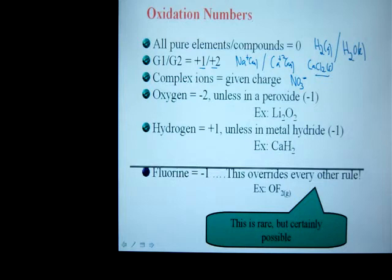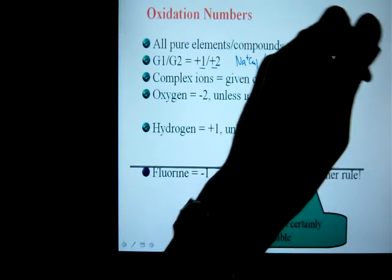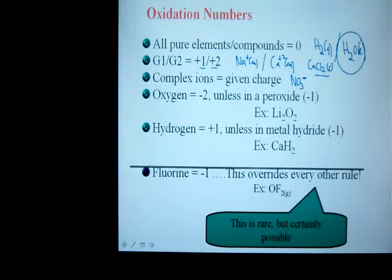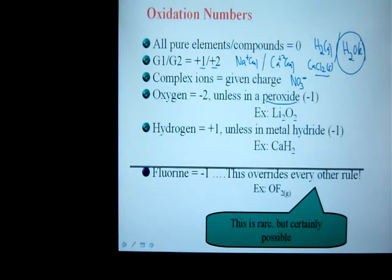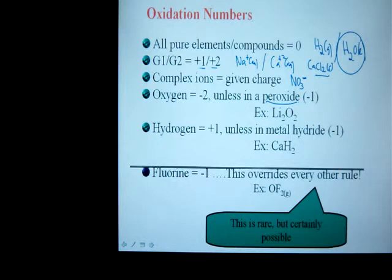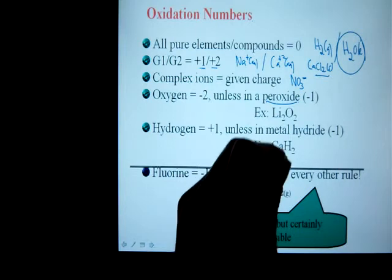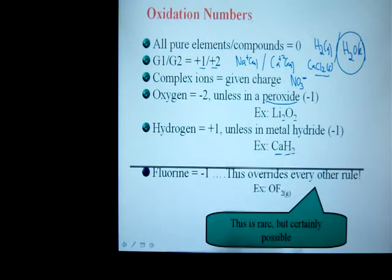That means the N and the three O's have to add up to equal negative one. Oxygen will always be negative two in a compound — so for instance, in water it's in a compound and therefore has a charge of negative two. However, unless it's in a peroxide, in which case the O is negative one. Hydrogen is always going to be plus one in a compound, unless it's in a metal hydride — basically an ionic compound where hydrogen is second — in which case it will be negative one.